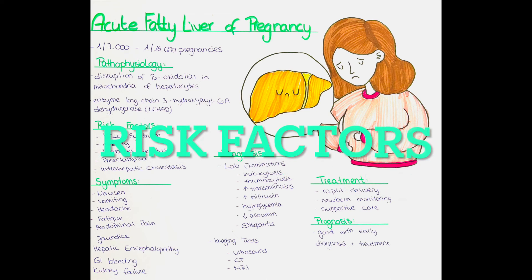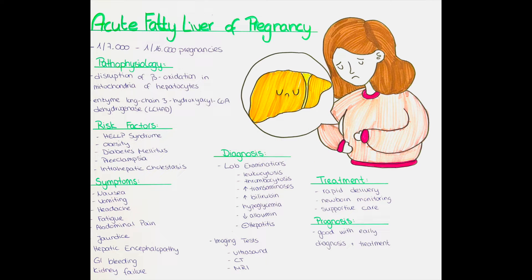What are risk factors for acute fatty liver in pregnancy? Having a family history of acute fatty liver in pregnancy or having a history of HELLP syndrome. Also obesity, diabetes, multiple pregnancies, preeclampsia, and intrahepatic cholestasis of pregnancy are risk factors.